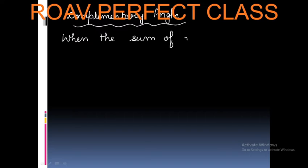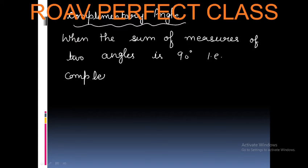Complementary Angles. Complementary Angles means when the sum of measures of two angles is 90 degrees. That is called Complementary Angles.